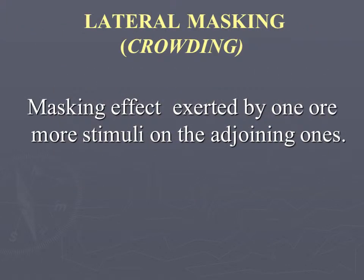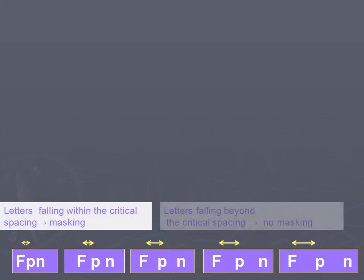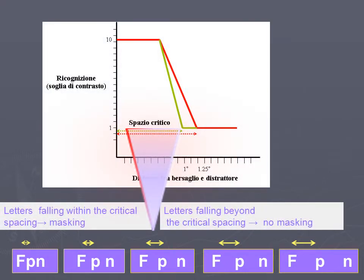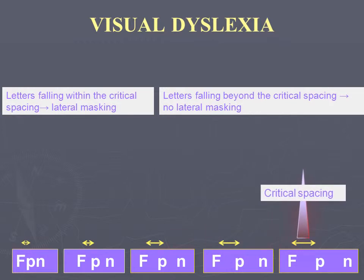An interesting subject, also from a rehabilitative point of view, is the finding of increased lateral masking, also known as crowding, in many dyslexic patients. Normally, adjacent letters tend to influence or mask each other, so that their perception is made more difficult compared to the same characters presented separately. The closer the letters, the stronger the lateral masking. Beyond a given spatial interval, called critical spacing, the reciprocal masking ceases. In many dyslexics the critical spacing is found to be wider, so adjoining letters that normally do not mask each other become crowded.